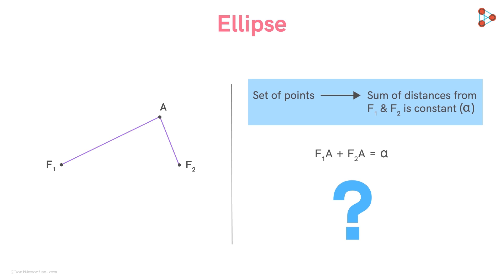Are there any such points? Yes, there are many more. The collection of all such points is called an ellipse.